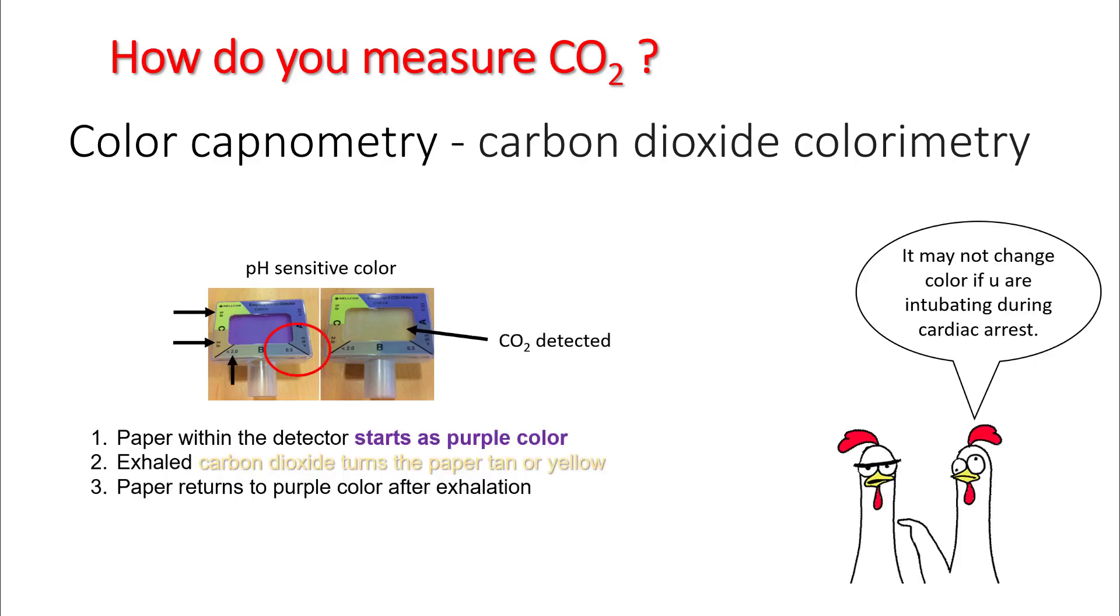There are a few things to remember in color capnometry. First, the color may not change if you're intubating somebody during cardiac arrest. The color might not be bright yellow, it might be some shade of yellow. That's because if you're not having enough pulmonary perfusion for removal of carbon dioxide, the carbon dioxide strip may not capture it.